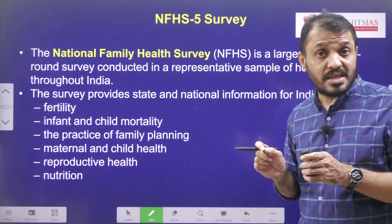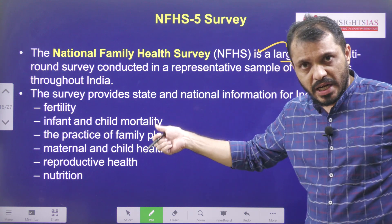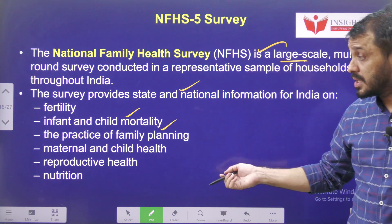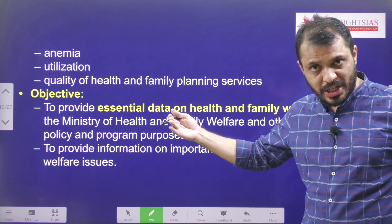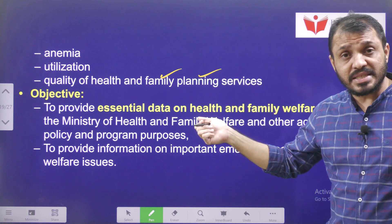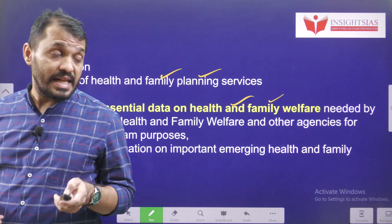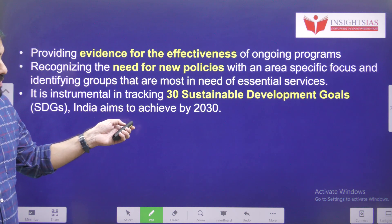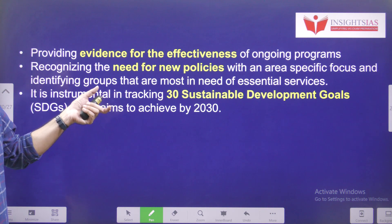Now let us focus on the National Family Health Survey (NFHS), as we have referred to it at various instances in this video. This survey provides information related to: fertility rates, infant and child mortality, practice of family planning, maternal and child health, reproductive health, nutrition, anemia and utilization of nutrition of both mother and baby, and quality of health and family planning processes. The objective is that it gives essential data related to family and health services. NFHS's main target is to achieve India's goals towards the Sustainable Development Goals, particularly the SDG related to quality health.